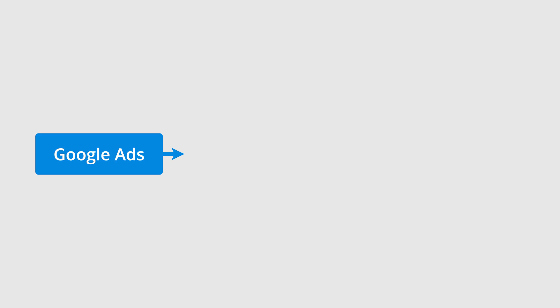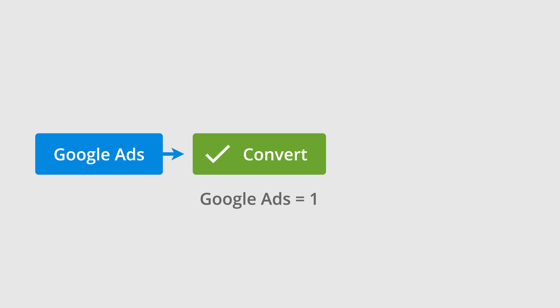Let me explain why. Someone searches on Google and then clicks your ad, coming to your website from Google Ads. Then they convert. If we were using the dedicated Google Ads conversion tag, we would see a conversion in Google Ads. And if we were importing conversions from Google Analytics, we would also see a conversion in Google Ads. So in this scenario, both options are accurate.